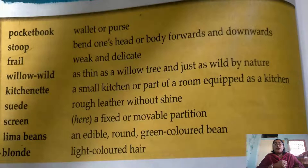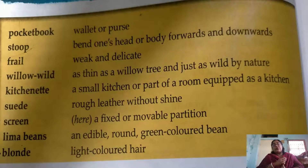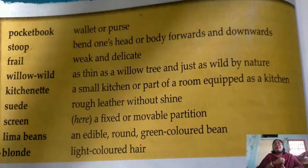Willow wild means as thin as a willow tree — you all have seen willow trees, a pine tree, and just as wild as a willow tree by nature. Number five: kitchenette, which is a small kitchen or a part of a room equipped as a kitchen. Number six: sweat — rough leather without a shine. He needed suede shoes, meaning a shoe with rough leather without shine.